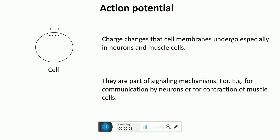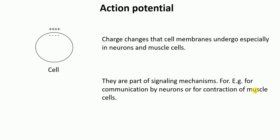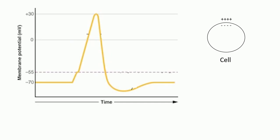In this video, I'm going to talk about action potentials. Action potentials are the charge changes that cell membranes undergo, especially in neurons and muscle cells. They are an important part of signaling mechanisms — for example, they are really important for communication by neurons or for the contraction of muscle cells. Action potentials are the changes of the charge across the cell membrane of nerve cells or muscle cells.